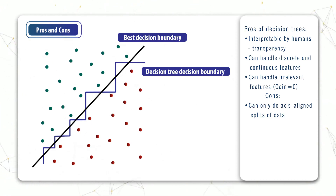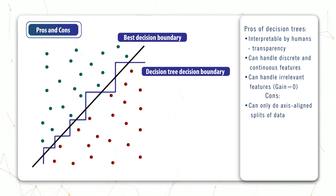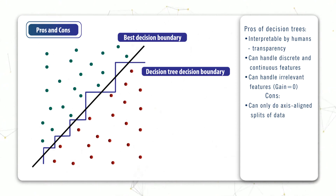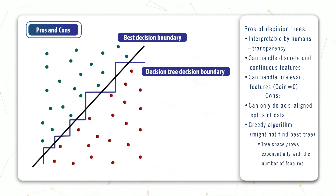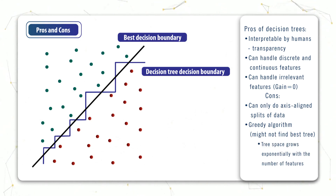Another downside is that a tree might not find the best solution because it's a greedy algorithm, and this issue is amplified by the fact that there exists an exponential number of potential trees. And then finally, another downside of decision trees is that they tend to overfit the data.